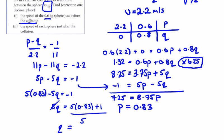Typing into a calculator, q equals 1.03 m/s. These are the speeds: 0.83 meters per second and 1.03 meters per second.